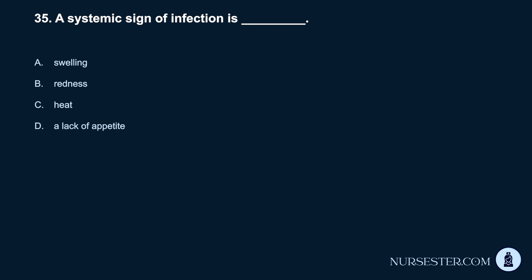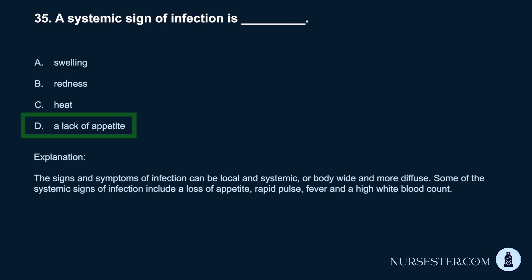Question 35. A systemic sign of infection is: a. Swelling. b. Redness. c. Heat. d. A lack of appetite. Correct answer: d. A lack of appetite. The signs and symptoms of infection can be local and systemic, or body-wide and more diffuse. Some systemic signs of infection include a loss of appetite, rapid pulse, fever, and a high white blood count.